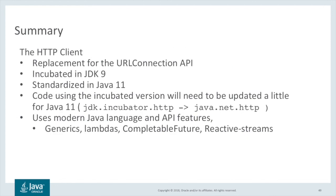To summarize, the standard HTTP client added in Java 11 is a replacement for performing HTTP access through the URL Connection API, which is now more than 20 years old. The HTTP client API was incubated in JDK 9, refreshed in JDK 10, and finally standardized in Java 11. Code using the incubating version of the API will need to be updated for Java 11 — minimally, the import statements will need to reflect the new standard package name. The HTTP client API uses more modern language features like generics and lambda, as well as more modern platform APIs like CompletableFuture and the Reactive Streams interfaces.